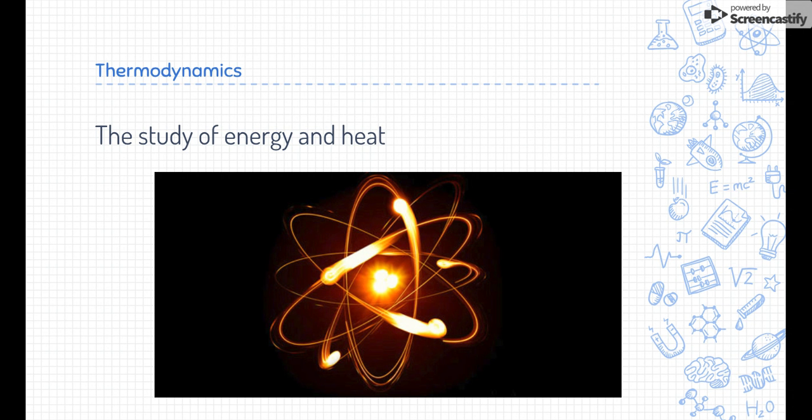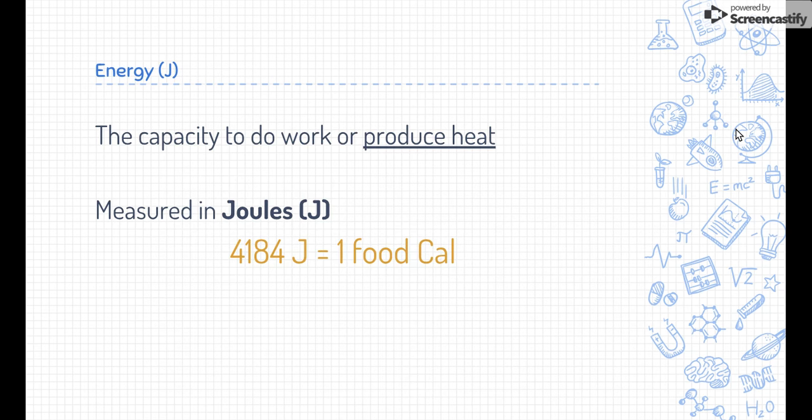Before we talk about specific heat, we want to talk about thermodynamics. This is going to be what we're talking about at the end of this unit as well as the complete next unit. Thermodynamics is the study of energy and heat. Energy is the capacity to do work or produce heat. If you've taken physics or physical science, you've probably learned a lot about work, which is to apply a force to move something a distance. But in chemistry, energy is in the form of heat, usually in fire or electricity. Energy is measured in joules. Joules is the unit of energy.